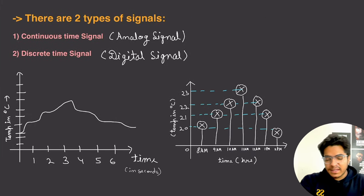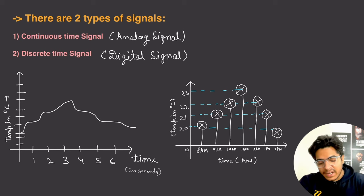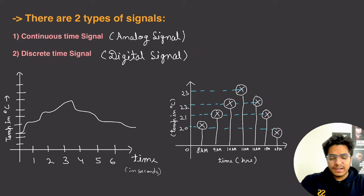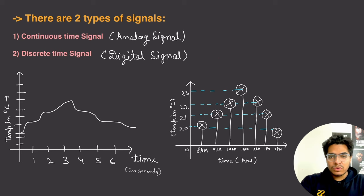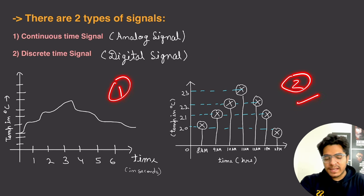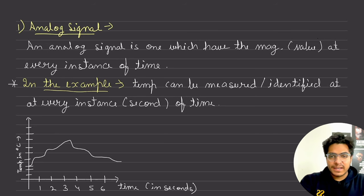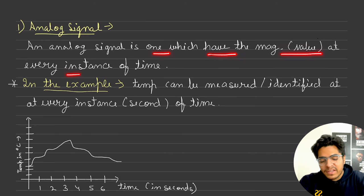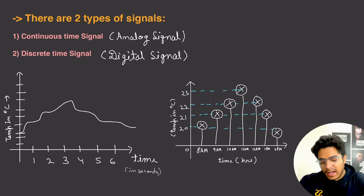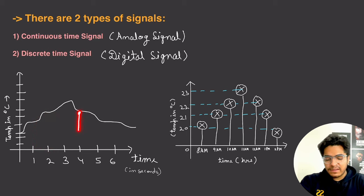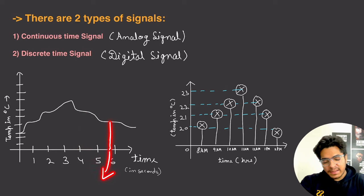There are two types of signals. First is the continuous signal, and second is the discrete time signal. We call a continuous signal an analog signal, and a discrete time signal a digital signal. An analog signal is one which has a magnitude at every instance of time. If we look at any point on the graph, we can retrieve the magnitude — for example at time 4, 4.77, or 5.9.